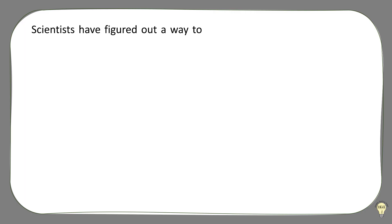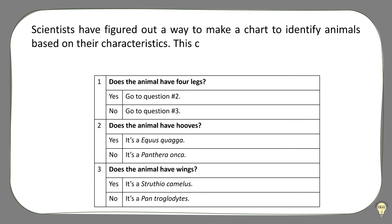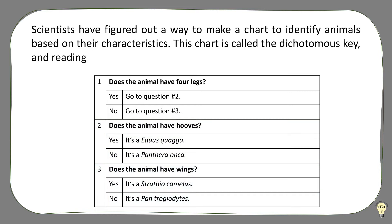Scientists have figured out a way to make a chart to identify animals based on their characteristics. This chart is called the dichotomous key, and reading it is pretty simple.